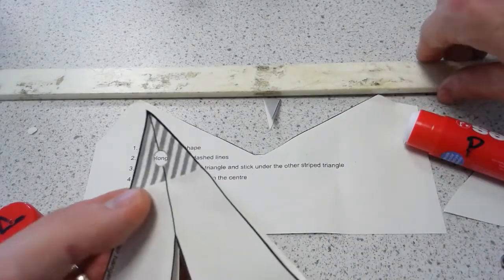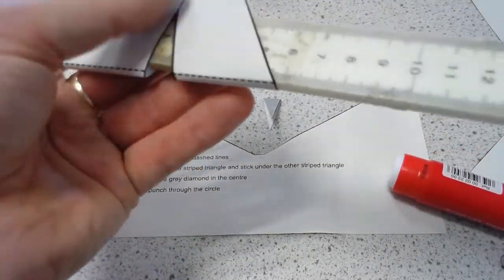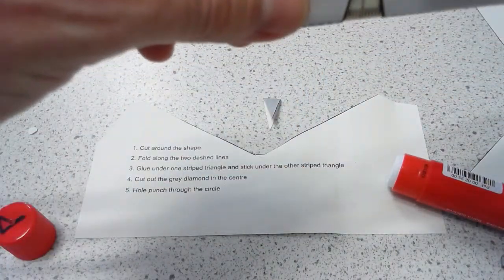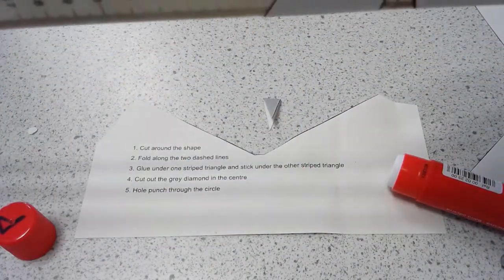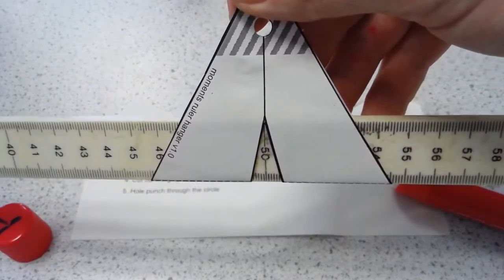So you want to hole punch it with the hole centered nicely along that line, and that's it, you're done. Then you just shove your ruler through here, and the idea is that it makes your moments experiment a bit easier to conduct because this is inherently stable when you hang it from the punched hole.